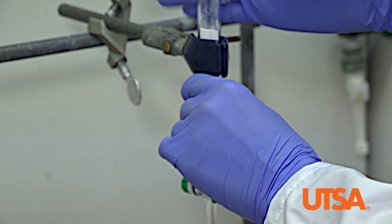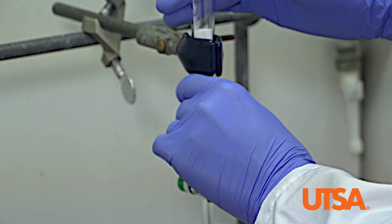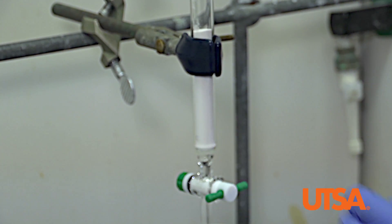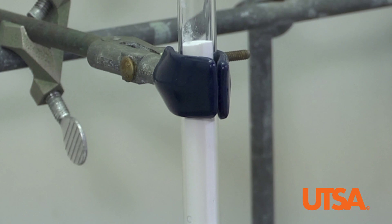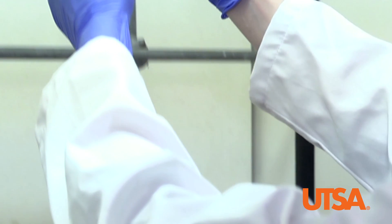Tap the column to make sure that the alumina lies flat. Next, we will add one centimeter of sand to the top of the alumina.